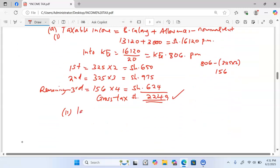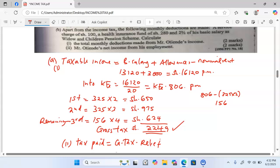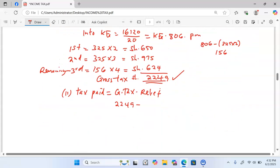And how do we get the tax paid? Tax paid or the actual amount paid would be gotten by taking the gross tax, we minus relief. The gross tax we have is 2,249 minus the relief of 455. And this one gives us an amount equivalent to 1,794. Again, that is Roman 2 done.